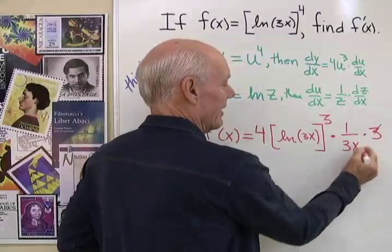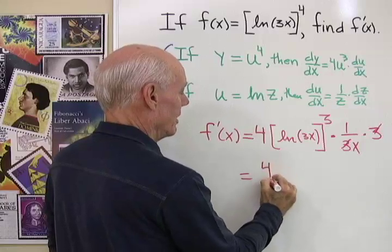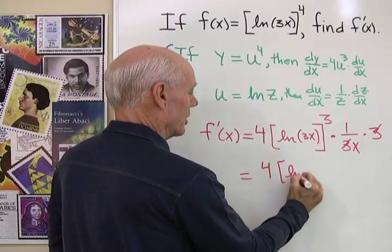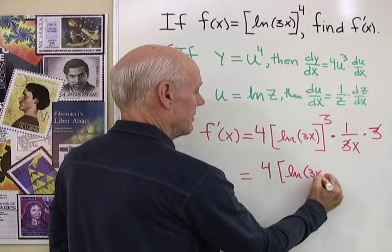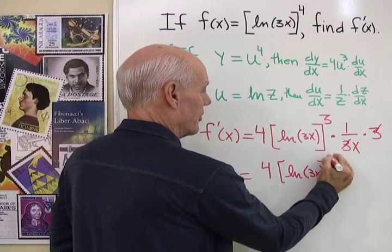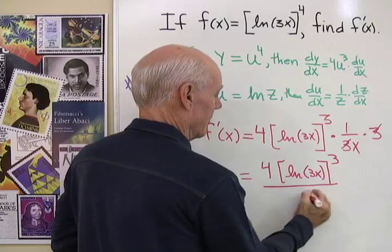Now I can divide out those 3s right there and I end up with 4 times natural log 3x, all to the third power, all divided by x.